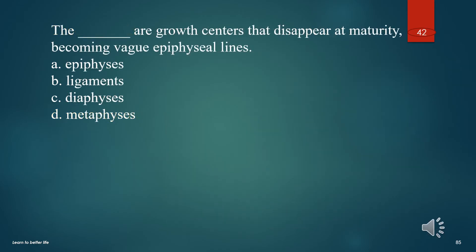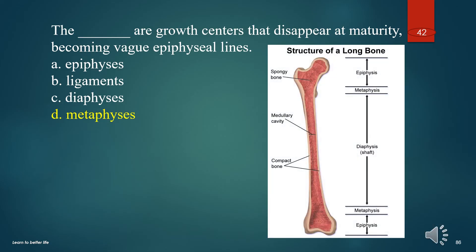The what are growth centers that disappear at maturity, becoming epiphyseal lines? A. Epiphyses. B. Ligaments. C. Diaphyses. D. Metaphyses. The answer is D. Metaphyses.